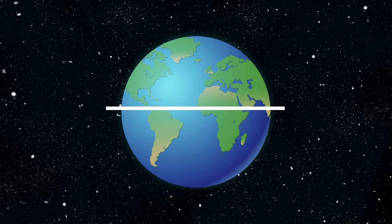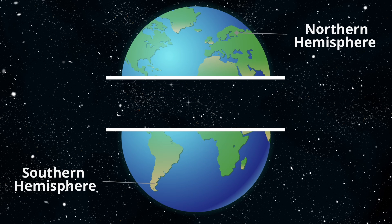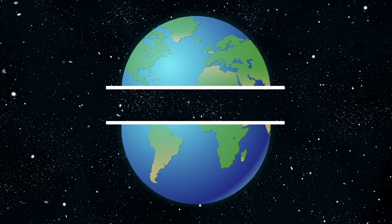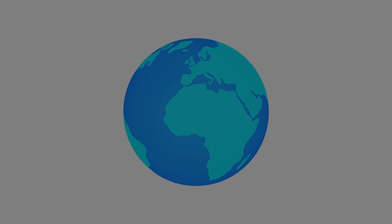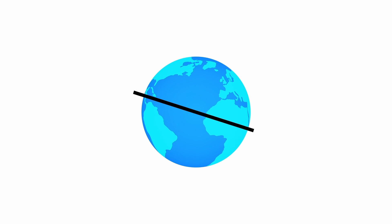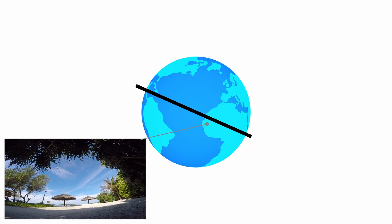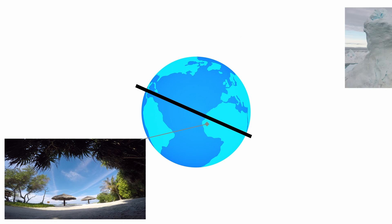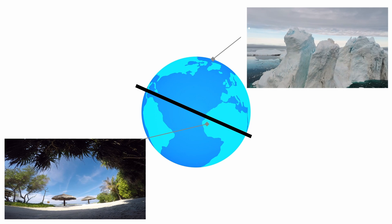Imagine a line slicing through the center of the Earth, dividing it into two hemispheres, northern and southern. This useful tool of the imagination is well known as the equator. Due to the Earth's spherical form and slight inclination on its axis, the regions along the equator continually receive the highest intensity of sunlight throughout the year, while the polar areas receive minimal sunlight, making them incredibly cold all year round.